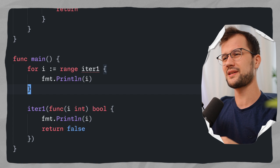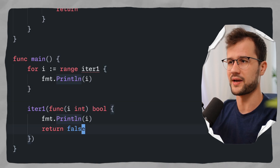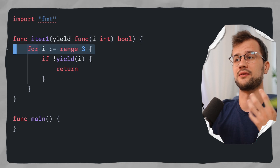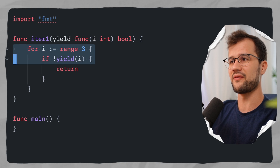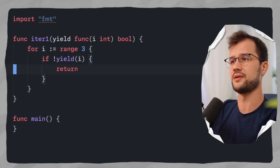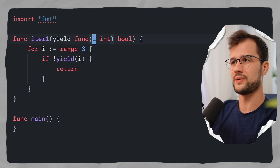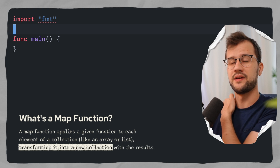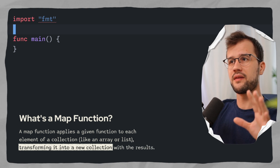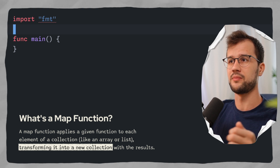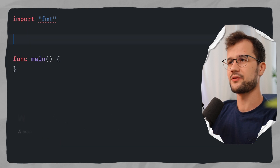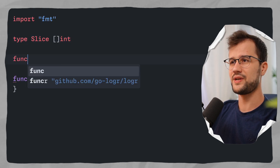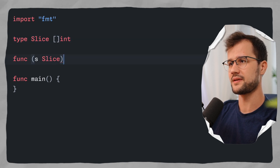This iter1 function is not a blueprint — you can do whatever you want with it. You don't have to loop over some number or slice. You can define whatever arguments you want in the yield function; the only requirement is that it returns a boolean. What we will do now is create a map function that maps over the elements of a slice with some transformation — like doubling the numbers. Let's create a type alias called slice of type int slice, and define a function on this type alias called map.